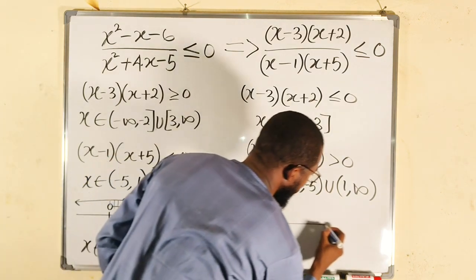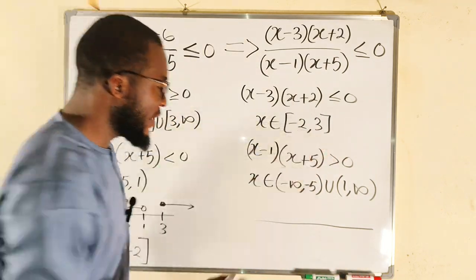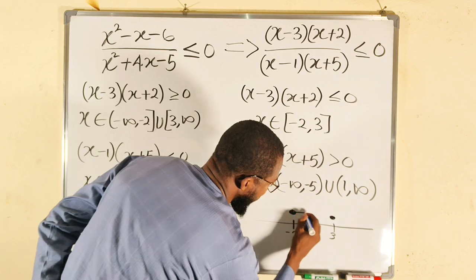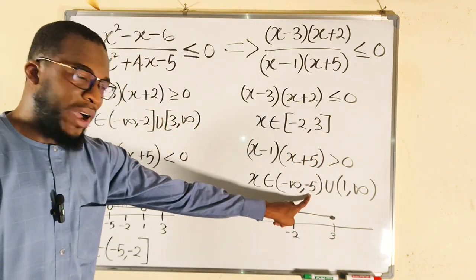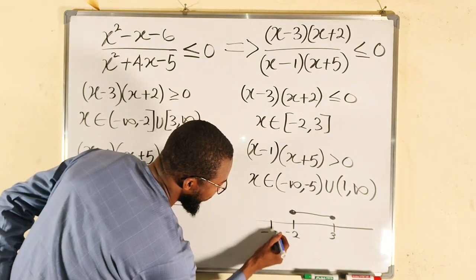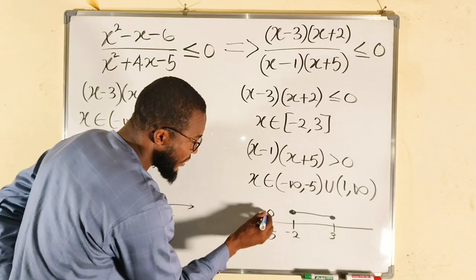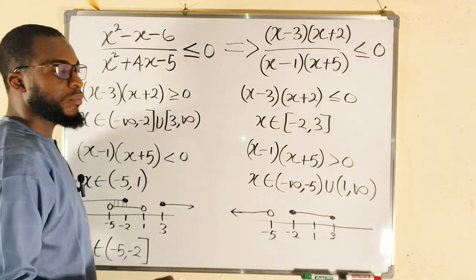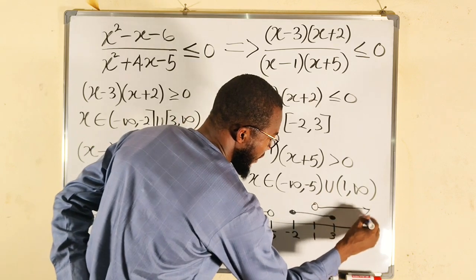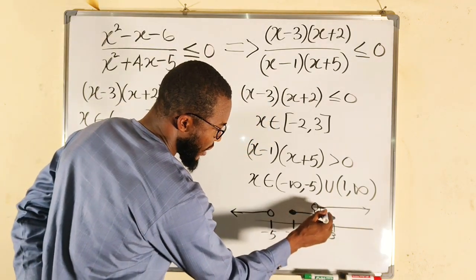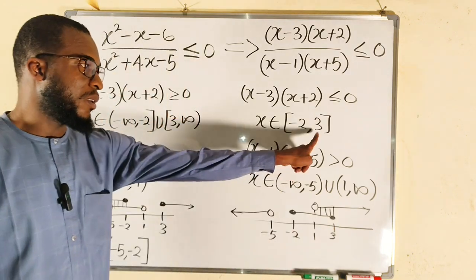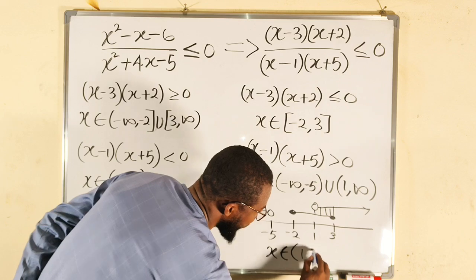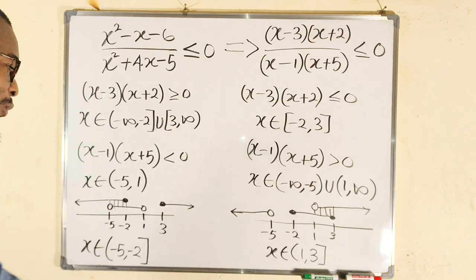For Condition 2: from negative 2 to 3 (both included) intersected with negative infinity to negative 5 (open) union 1 to positive infinity. Positive 1 is between negative 2 and 3. The intersection is from 1 (not included) to 3 (included), so x belongs to the set of values from 1 to 3, where 3 is included.